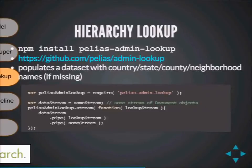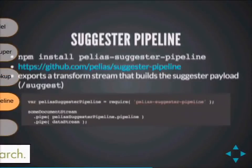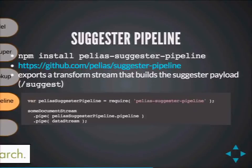Then there's the hierarchy lookup, which ensures your data is complete by looking up the given point, reverse geocoding it, and assigning neighborhood, state, and country values if they're missing. If the data is already complete, it passes right through to the next module, the suggest pipeline. Since we use Elasticsearch's completion suggester for autocomplete, this module builds the payload — telling Elasticsearch that when a user starts typing any of the listed inputs, it refers to the given document point.